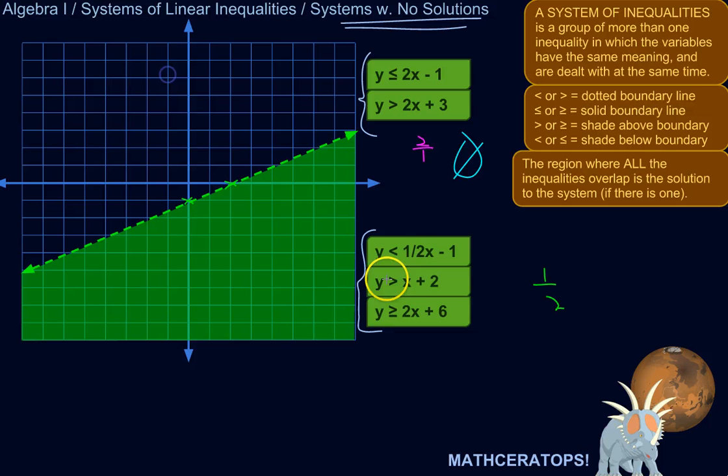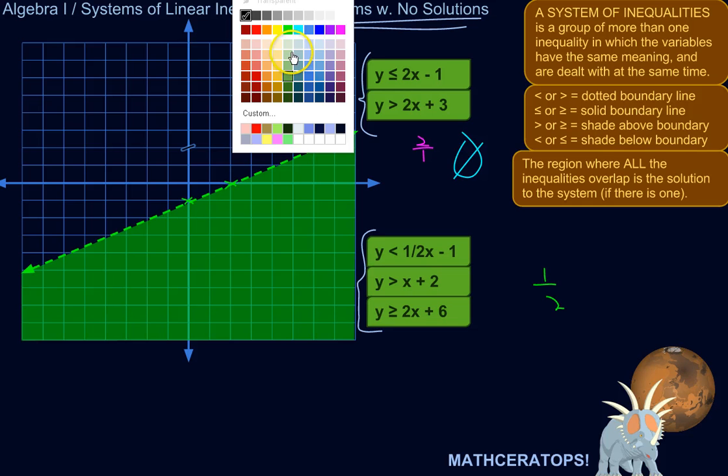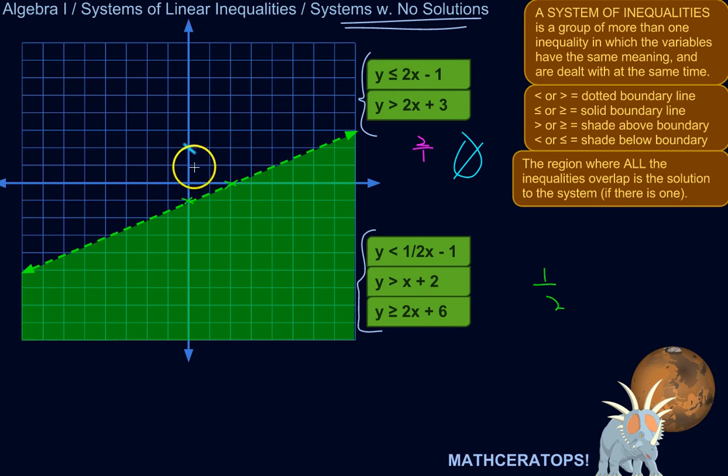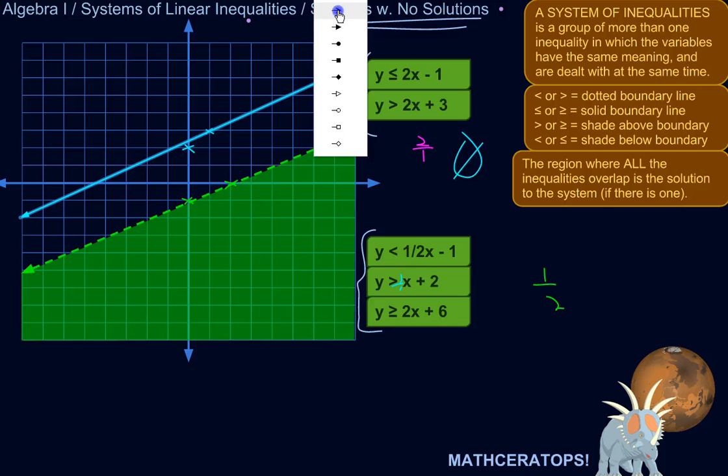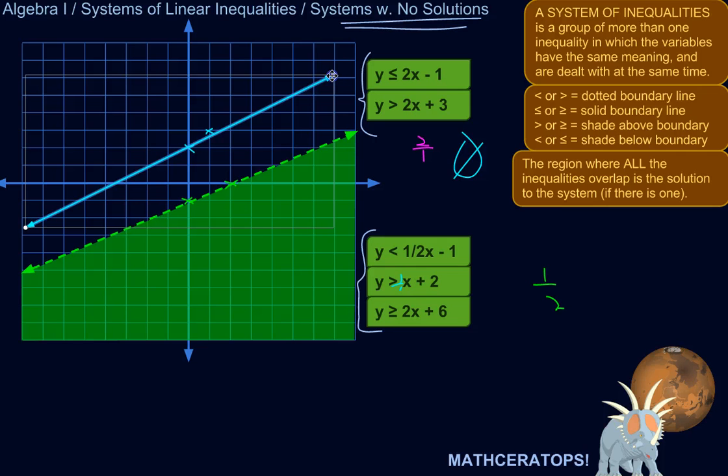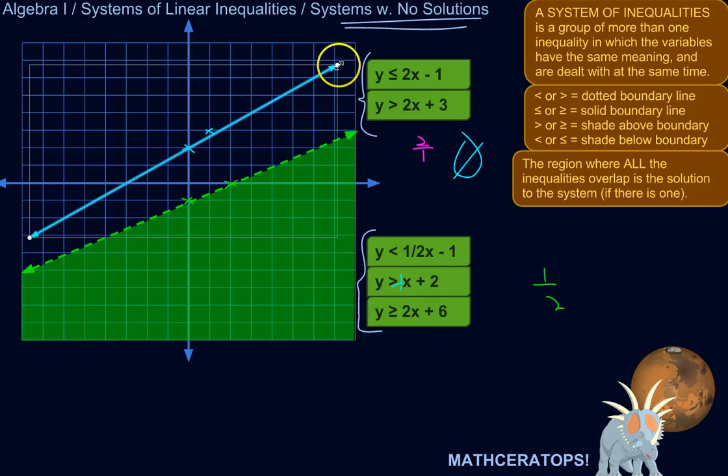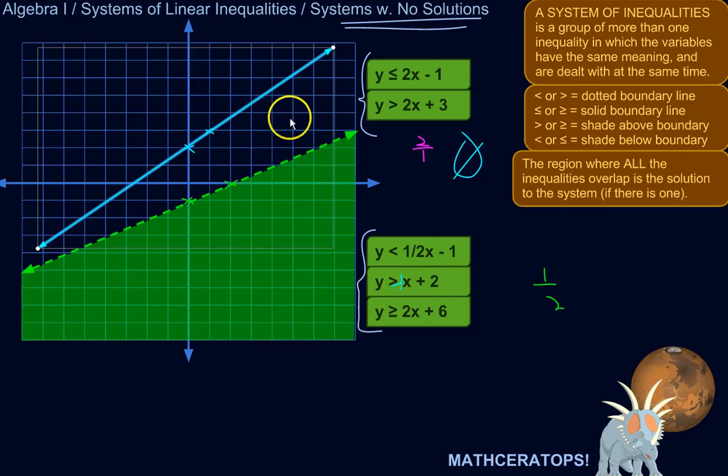Now let's graph the second one. Y is greater than X plus two. So y-intercept is 1, 2. And then slope is one. It's kind of like an invisible one there, which you can think of as one over one. So up one over one. And it's greater than, so I need to make that dotted. And it's greater than, so I'm shading above.